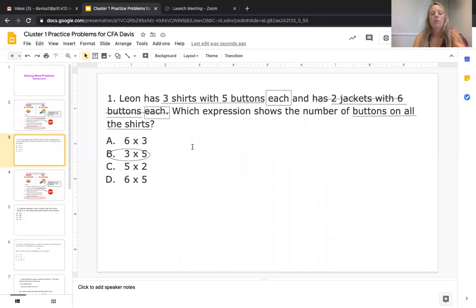In the first video we worked on the problem about Leon who had shirts and jackets. When we read all the way through to the question, we realized this is trying to trick me—I don't need to worry about jackets at all, I just need to focus on the shirts. We also learned about that key word 'each'—that 'each' is going to usually mean multiply or divide, so keep an eye out for it.